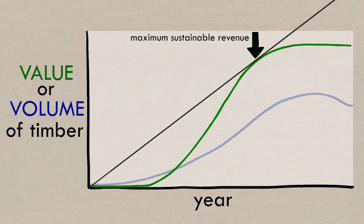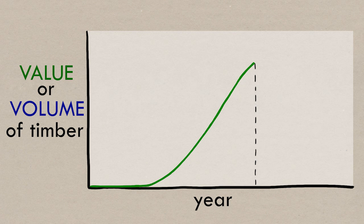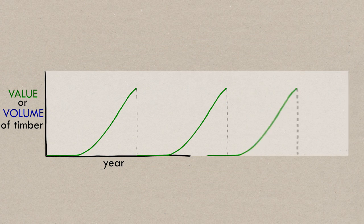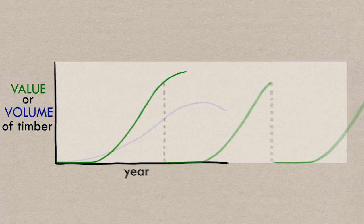In terms of maximizing revenue, this is the optimal rotation age. After we cut, assuming the forest will grow back in an identical fashion, we will be getting the most money we can get from this parcel of land from forestry. If we repeat the forestry rotation, we will be maximizing our revenue. That's why we call it the maximum sustainable revenue.